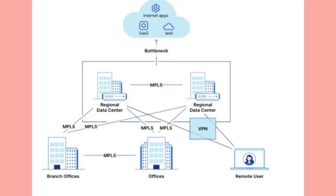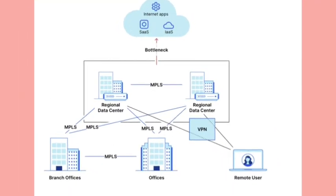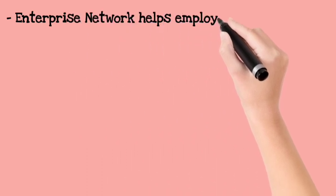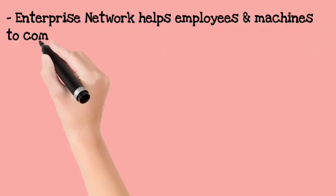We can share information, we can run our services or programs, and we can analyze system performance. Now let's see some architecture. Here we have branch offices and users. This is connected to VPN — Virtual Private Network — or MPLS, Multiple Protocol Label Switching, which is connected to a network.